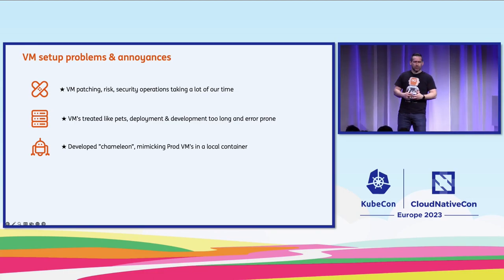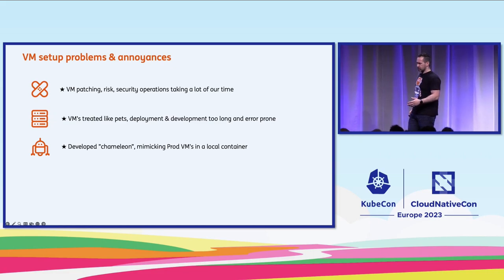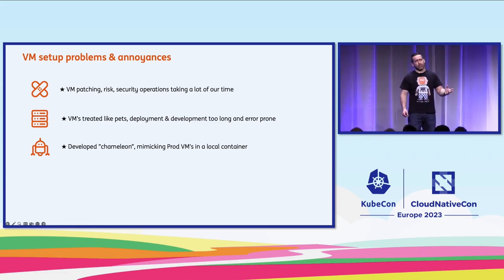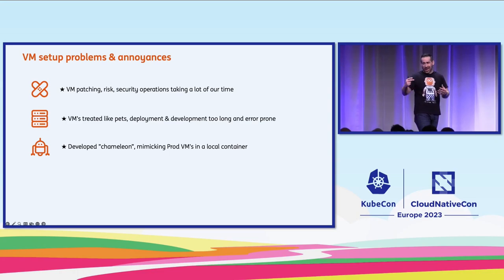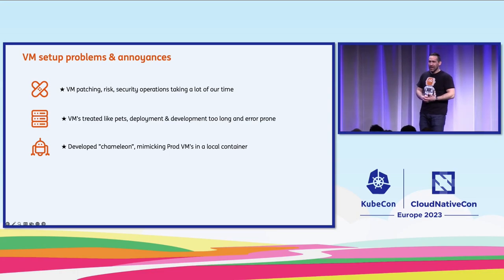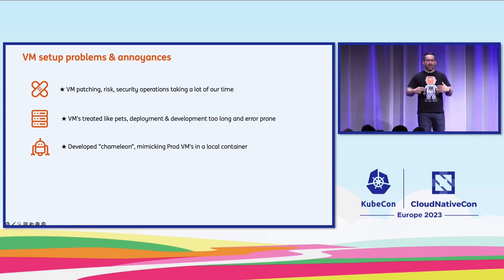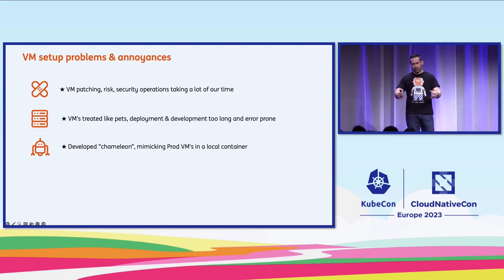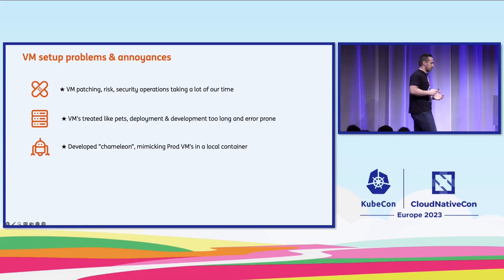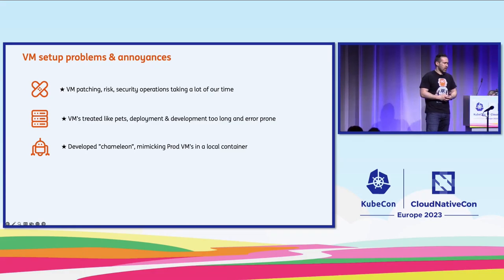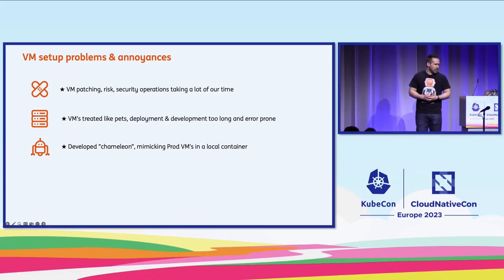Instead of having to commit our changes, push them, create a pull request, wait for approval, wait for the changes to be merged, and wait for a pipeline to pick them up — just to see a syntax error half an hour later — now we had an immediate response loop. If something was wrong with our code, we could see it immediately. This made things drastically faster, at least in terms of development and deployment.